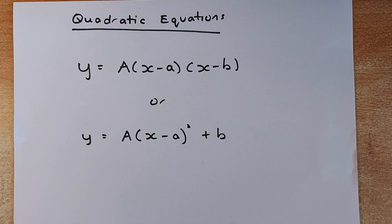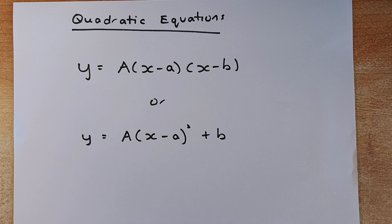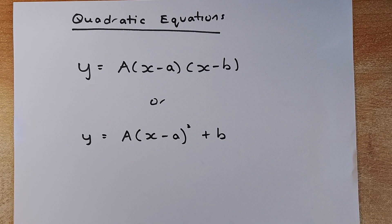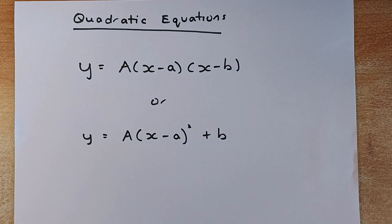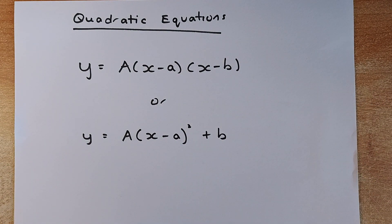Good morning, everyone. This is Mr. Ong again. Today, we are going to learn how to find the equation of a quadratic graph. I've prepared three questions from the past year's NCA Level 1 exam, and we shall look at each and every one of them, starting with the 2017 exam. The equation can be formed using the first form, which is called the factorized form, or the second form, which can be done on all quadratic graphs. We shall do both and see which method you like.